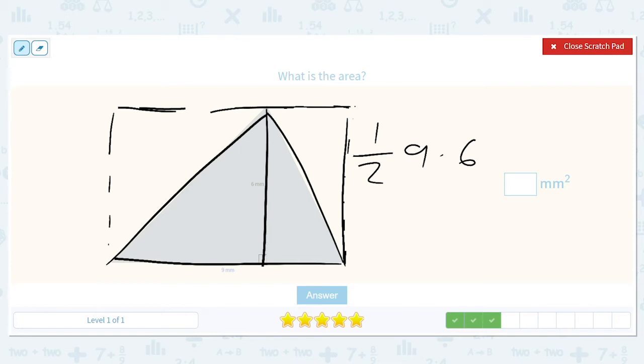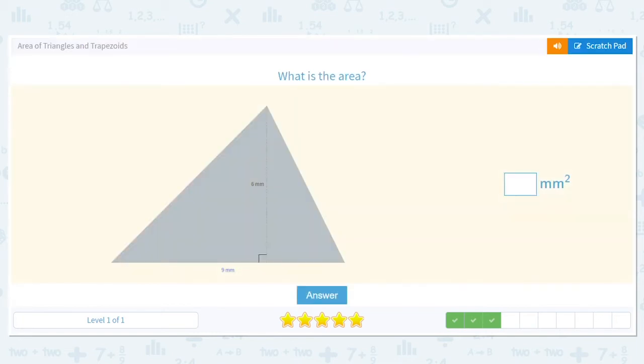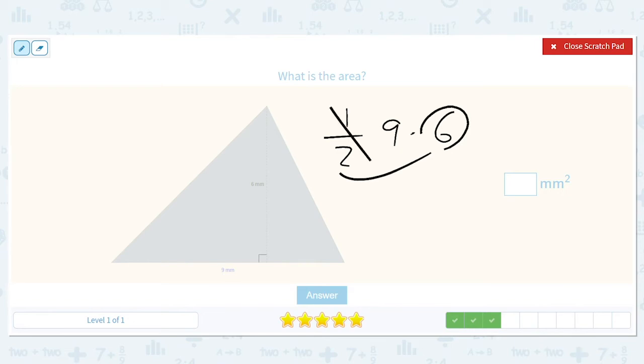So it's still one-half, nine times six. It's a cool thing. So one-half, nine times six. Go ahead, divide that by two. So it's nine times three, or 27.